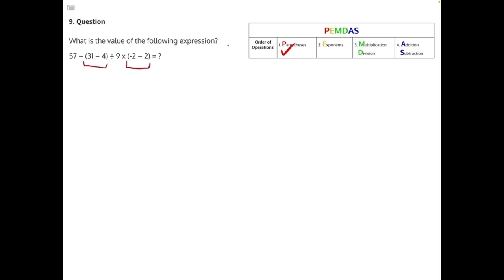Starting with the first group, 31 minus 4 will give us 27. Then in the second group, negative 2 minus 2, subtracting a positive is the same as adding a negative. Negative 2 plus negative 2 will give us negative 4.